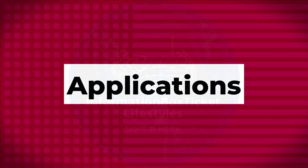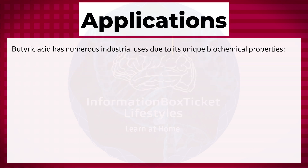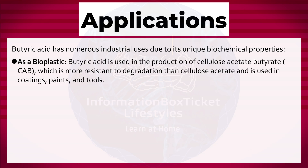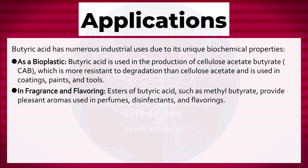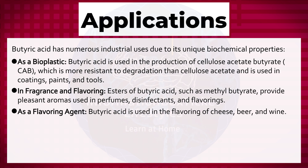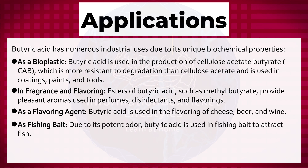Butyric acid applications: butyric acid has numerous industrial uses due to its unique biochemical properties. As a bioplastic, it is used in the production of cellulose acetate butyrate, which is more resistant to degradation than cellulose acetate and is used in coatings, paints, and tools. In fragrance and flavoring, esters of butyric acid such as methyl butyrate provide pleasant aromas used in perfumes, disinfectants, and flavorings. As a flavoring agent, butyric acid is used in the flavoring of cheese, beer, and wine. Due to its potent odor, butyric acid is also used in fishing bait to attract fish.